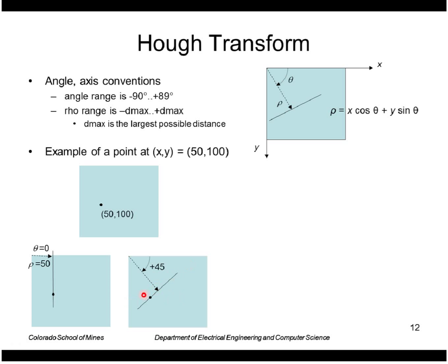Here's a line passing through the point which is diagonal. The perpendicular to that is this vector here, which has an angle of 45°. The length of that vector I can calculate by plugging into the equation for the line—namely plugging in the x and y coordinates and the value theta 45°. So it comes out to be 75√2.